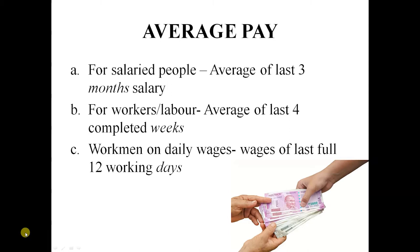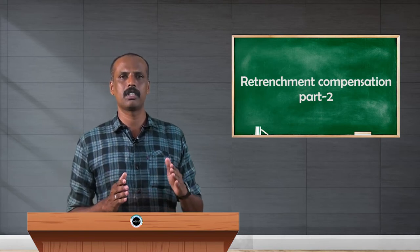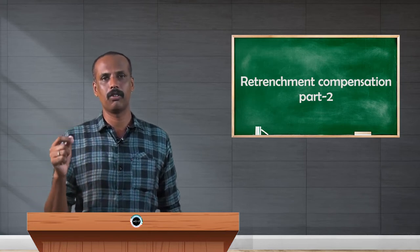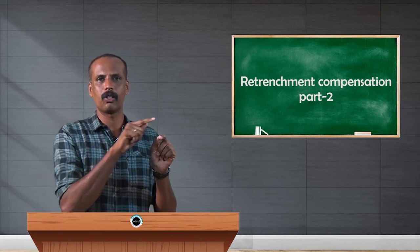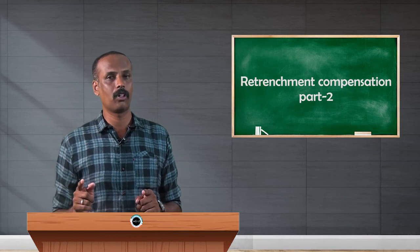The third category is daily wages employees. If an employer retrenches a daily wages employee, the average pay is calculated based on the wages of the last full 12 working days. He may receive different amounts each day. We take the aggregate of all 12 days salary, divide by 12 to get one day's salary, then multiply by 15 days — that is the amount of compensation.